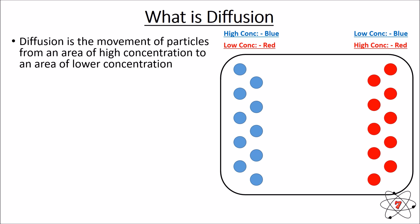There are no red particles on the left hand side so there is a low concentration of red. On the other hand on the right hand side of the screen there are no blue particles at all so it has a low concentration of blue. There are lots of red particles so there is a high concentration of red.